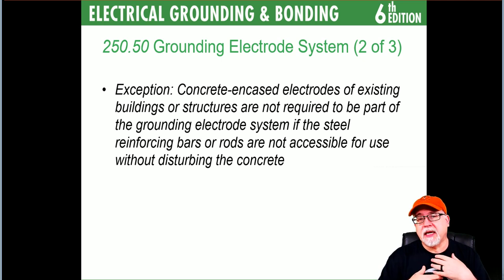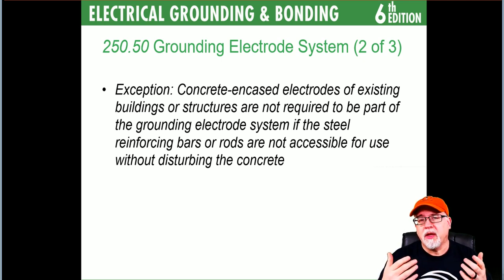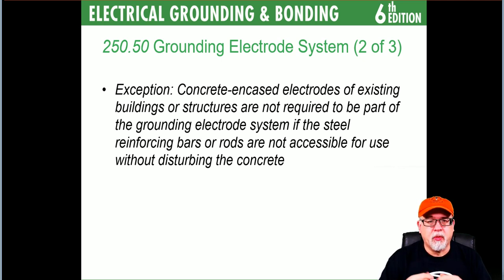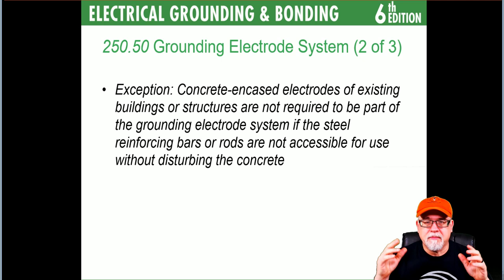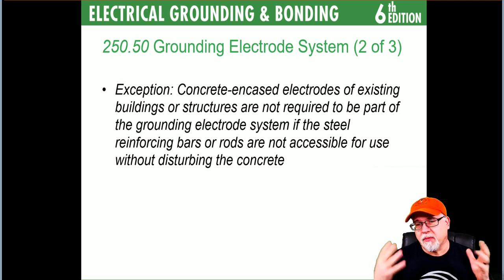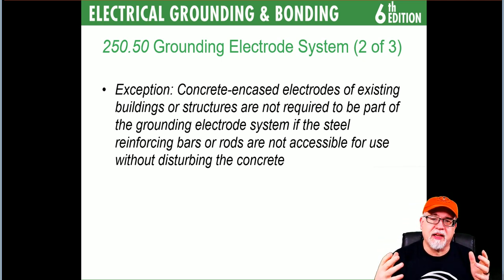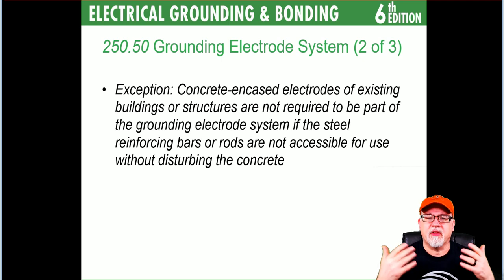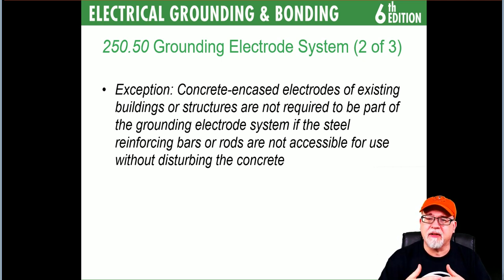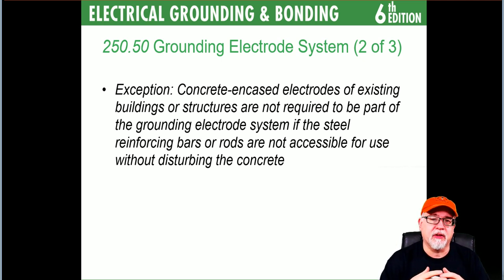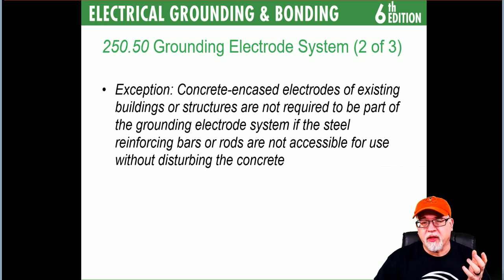We used to use the term 'all electrodes available'; now we use 'all that are present.' If a concrete encased electrode is already in the slab and the only way to connect to it would be to chisel it up, then you treat it as not present and install a grounding electrode system accordingly — you wouldn't install the concrete encased electrode option in that case.